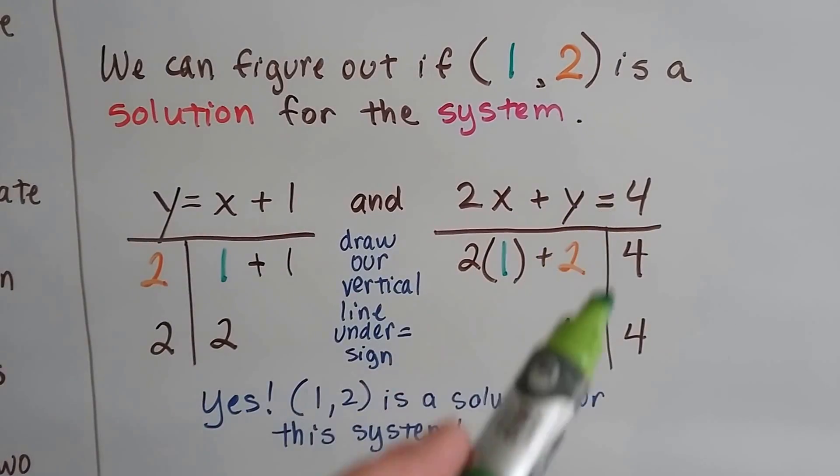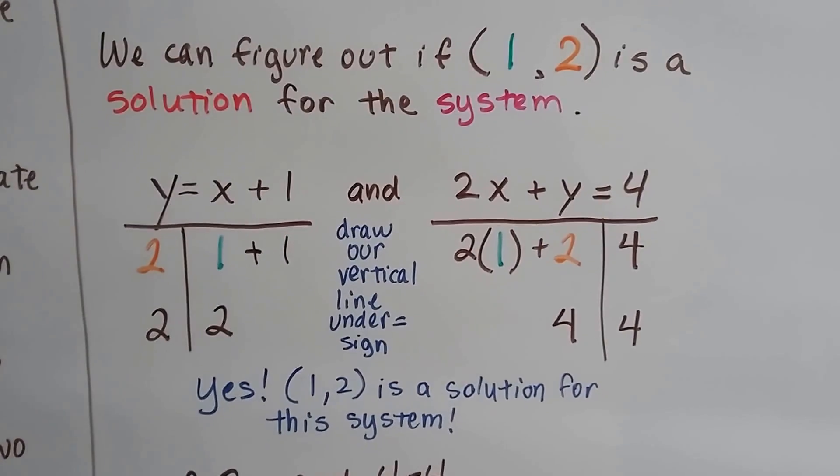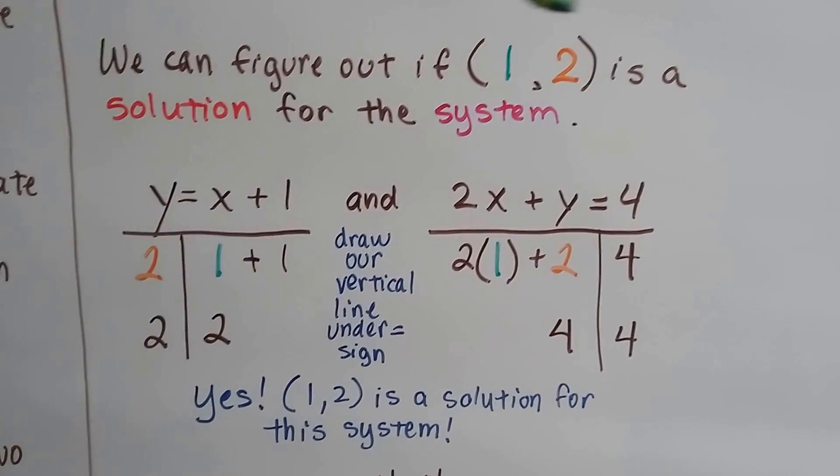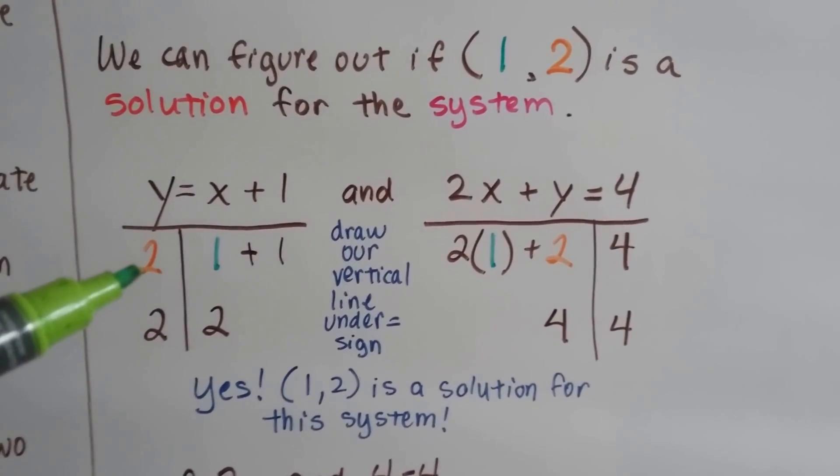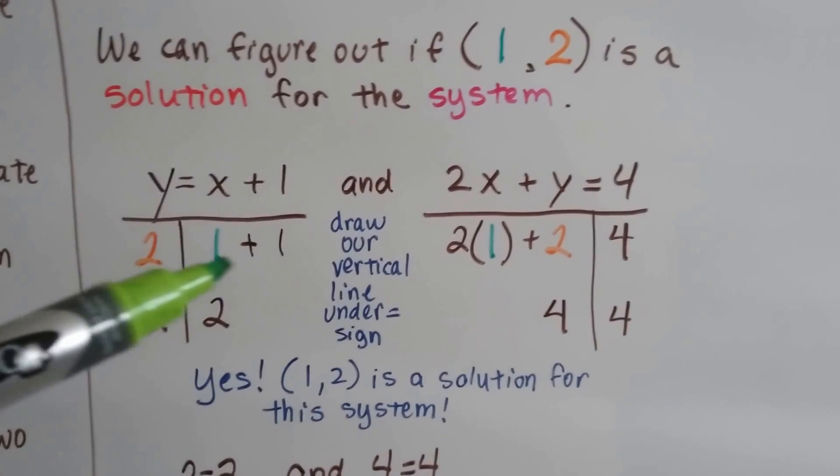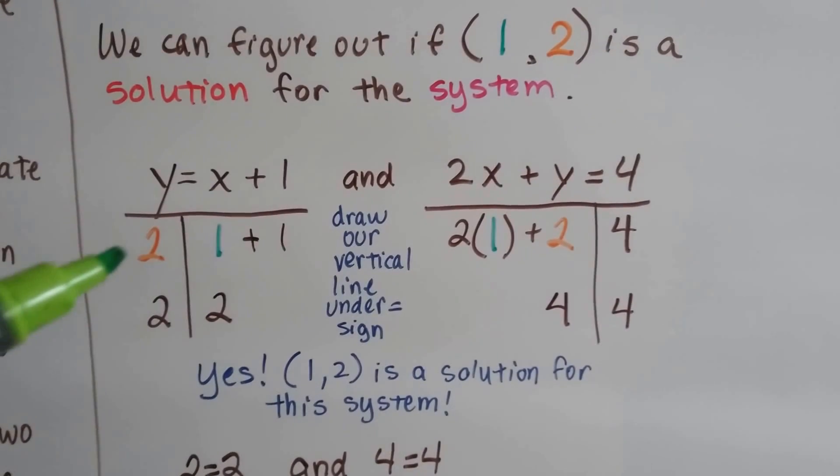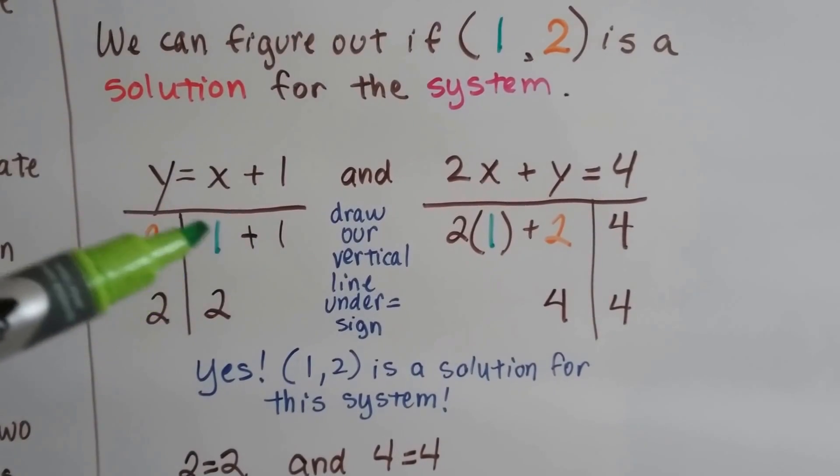We draw a line underneath it, and then we draw a line underneath the equal sign. And we plug in our values for x and y, 1 and 2. So y is a 2, so we put a 2 here, x is a 1, so we put a 1 here, and then we do the plus 1.